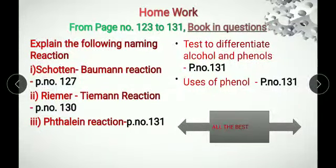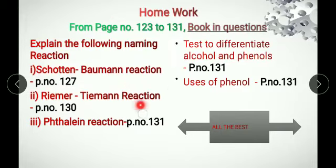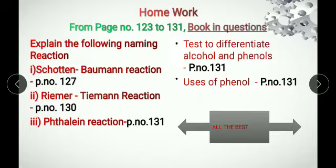Booking questions from page number 123 to 131. First one: explain the following naming reactions — Schotten-Baumann reaction on page 127, Reimer-Tiemann reaction on page 130, and Thalin reaction on page 131. Then, test to differentiate alcohol and phenol, page 131. Then, uses of phenol, also on page 131. I will give some important booking questions. Try to write. Here, now we can see the questions one by one.